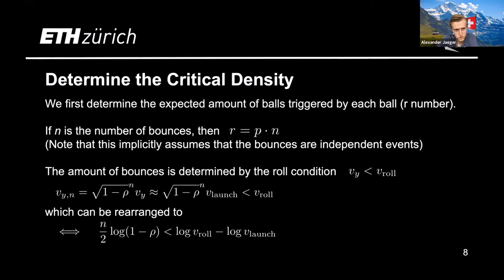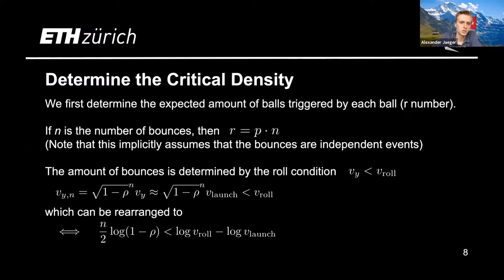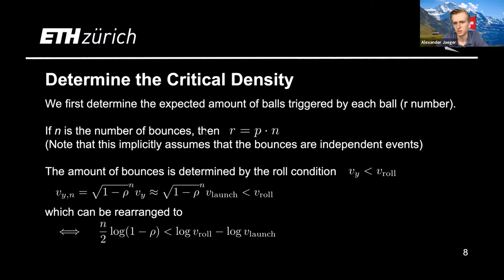Part of the question asks us to determine the critical density. We first determine the expected number of balls triggered by each ball — the R number, which everyone became familiar with through COVID. If R is greater than one, we have a chain reaction because each ball triggers more balls; if it's less than one, the chain reaction dies down. If N is the number of bounces before termination, the R number is given by the trigger probability multiplied by N. We note this implicitly assumes bounces are independent events, which isn't always correct — if bounces become smaller, we could double count events.